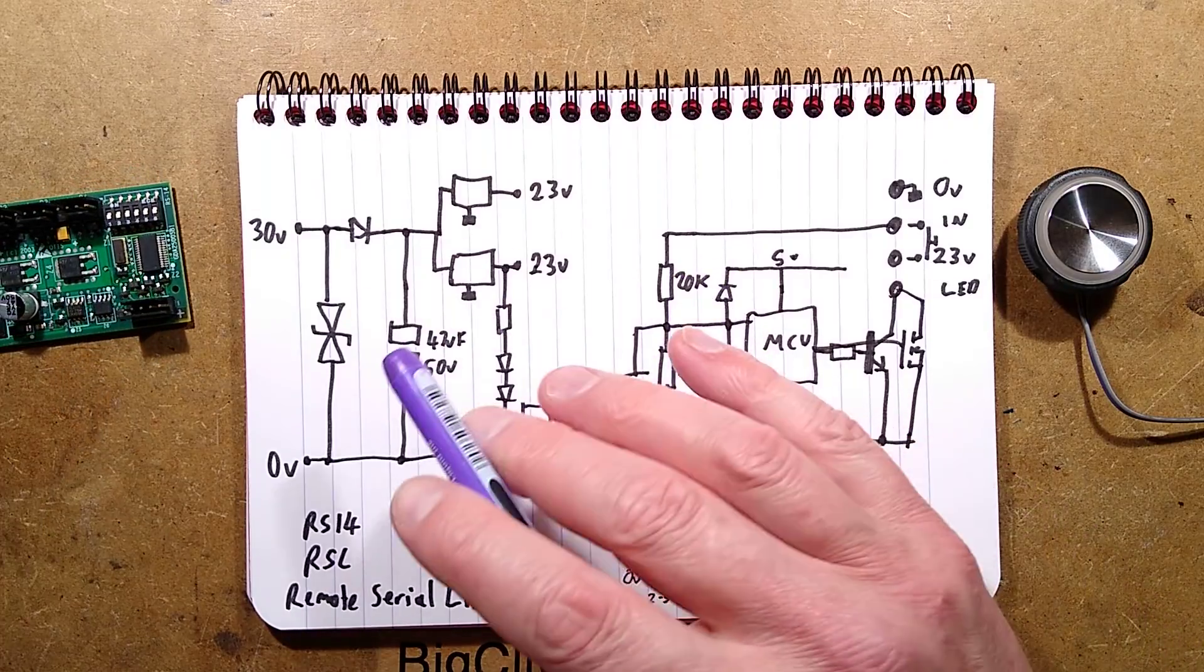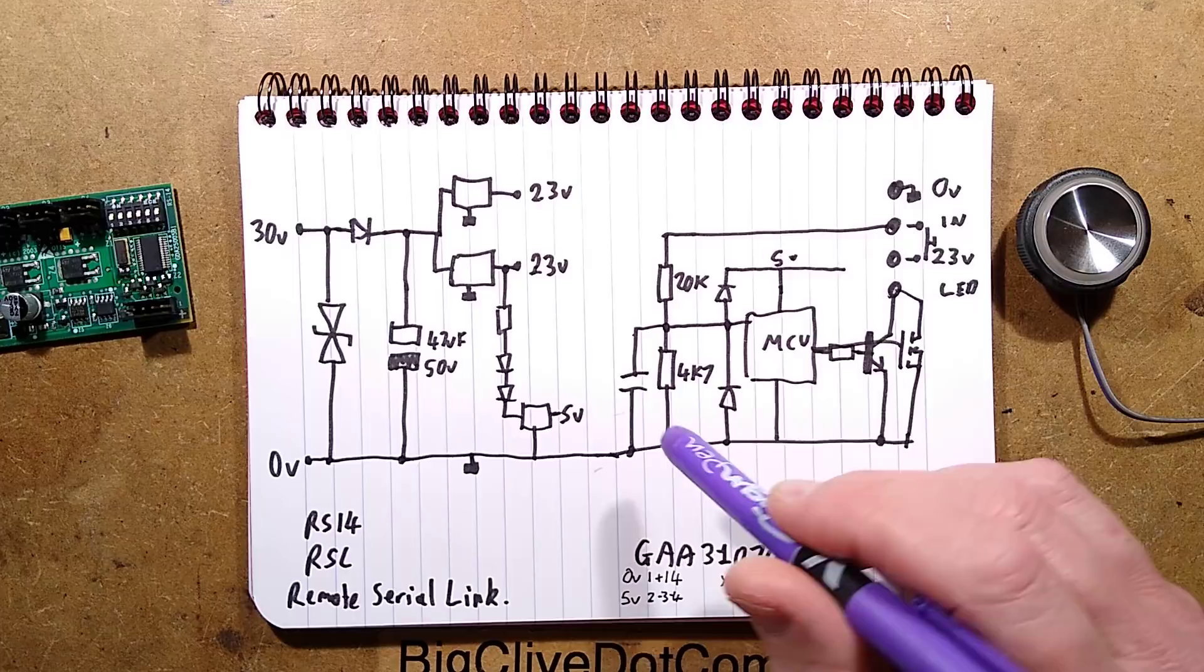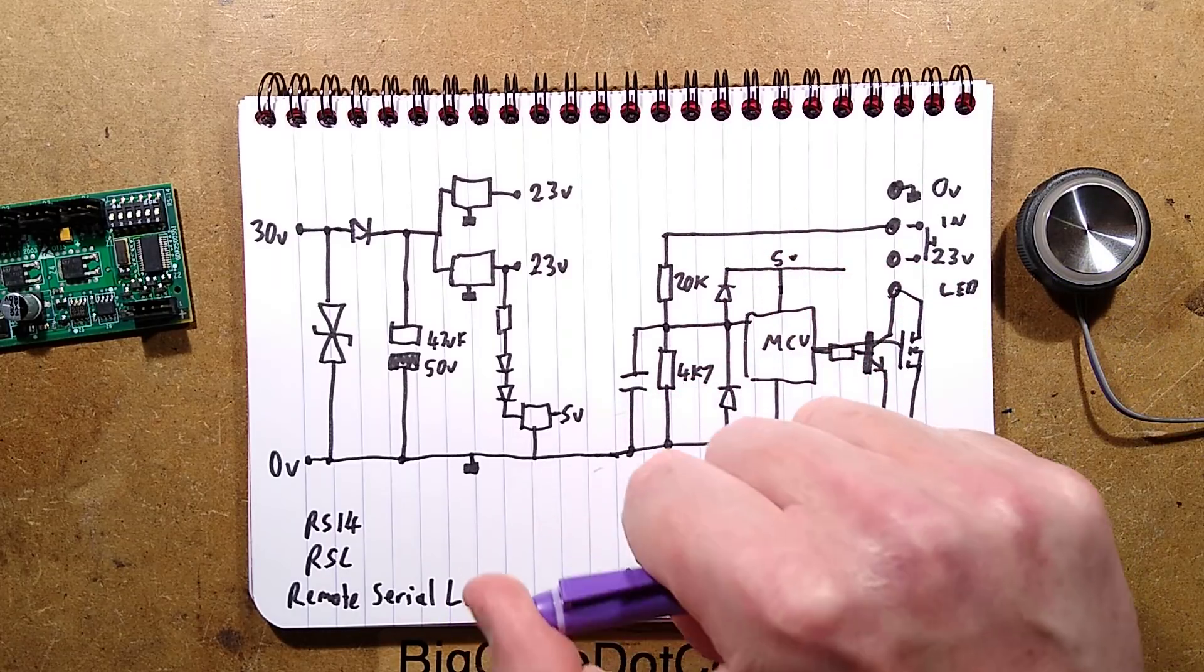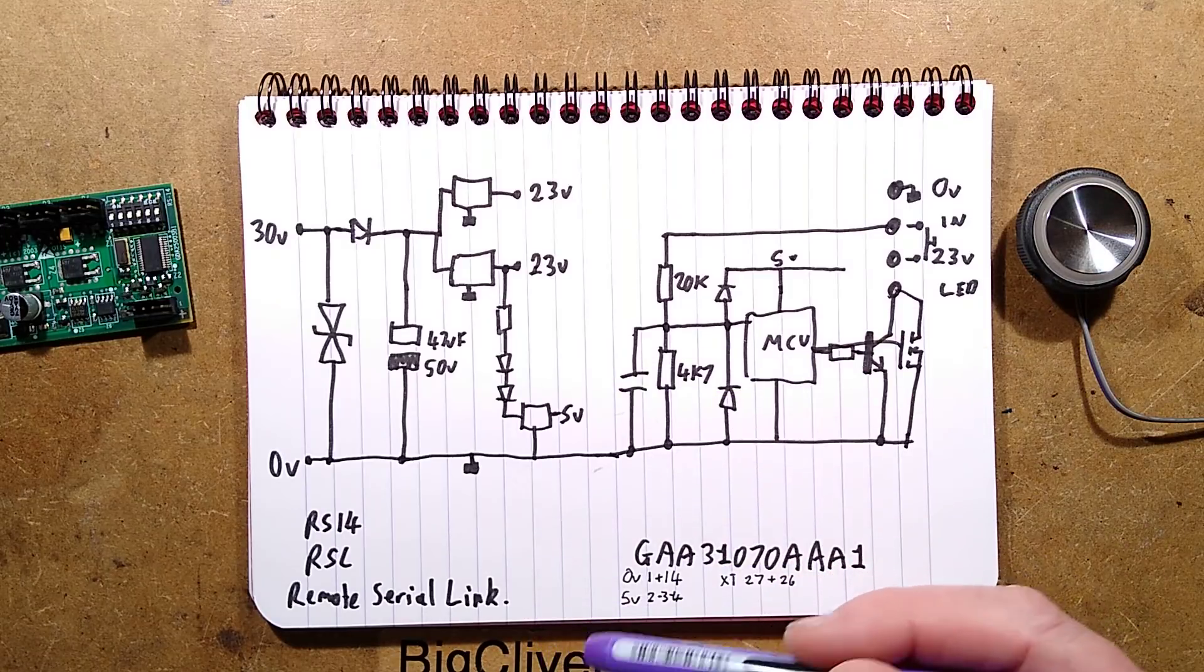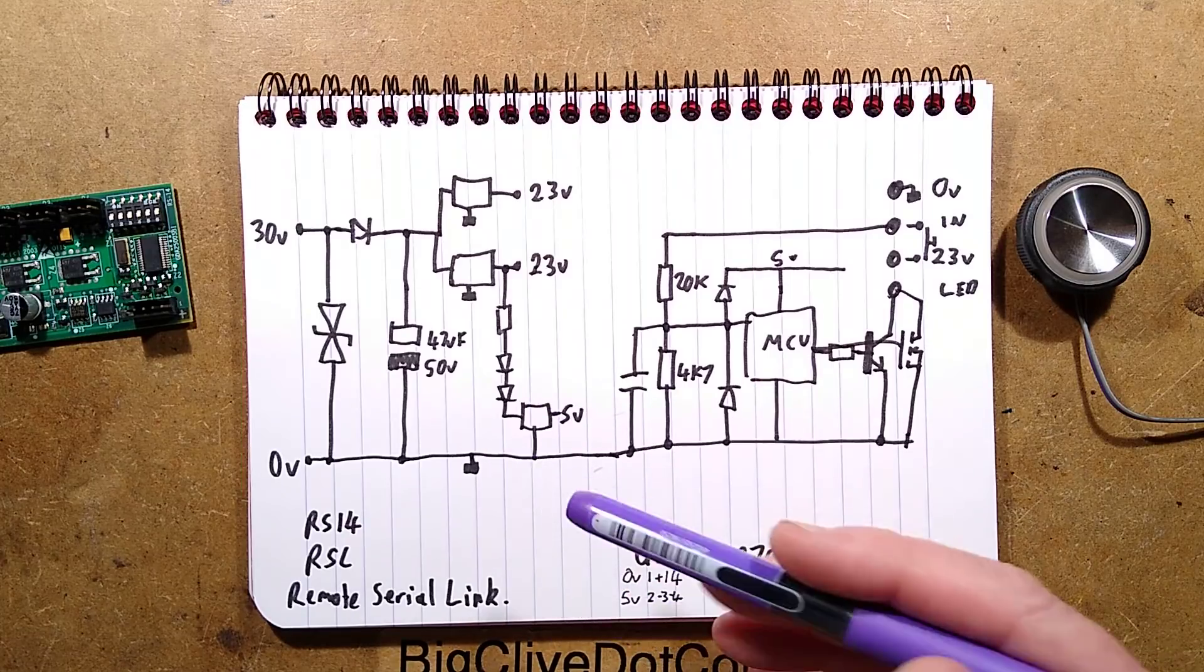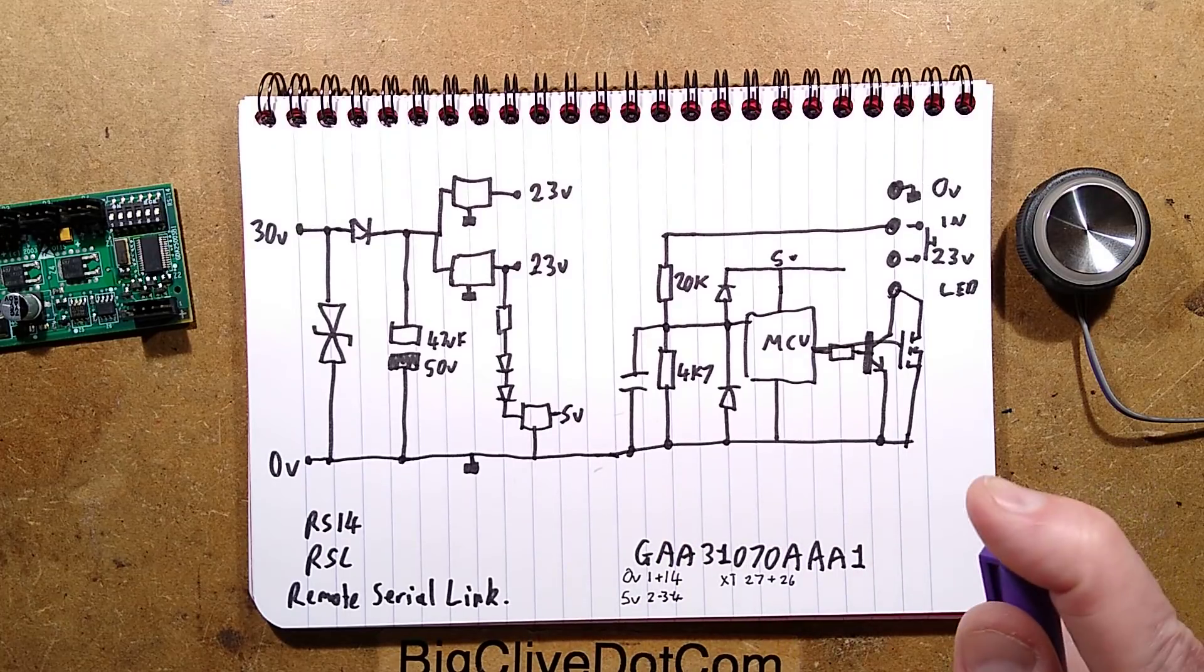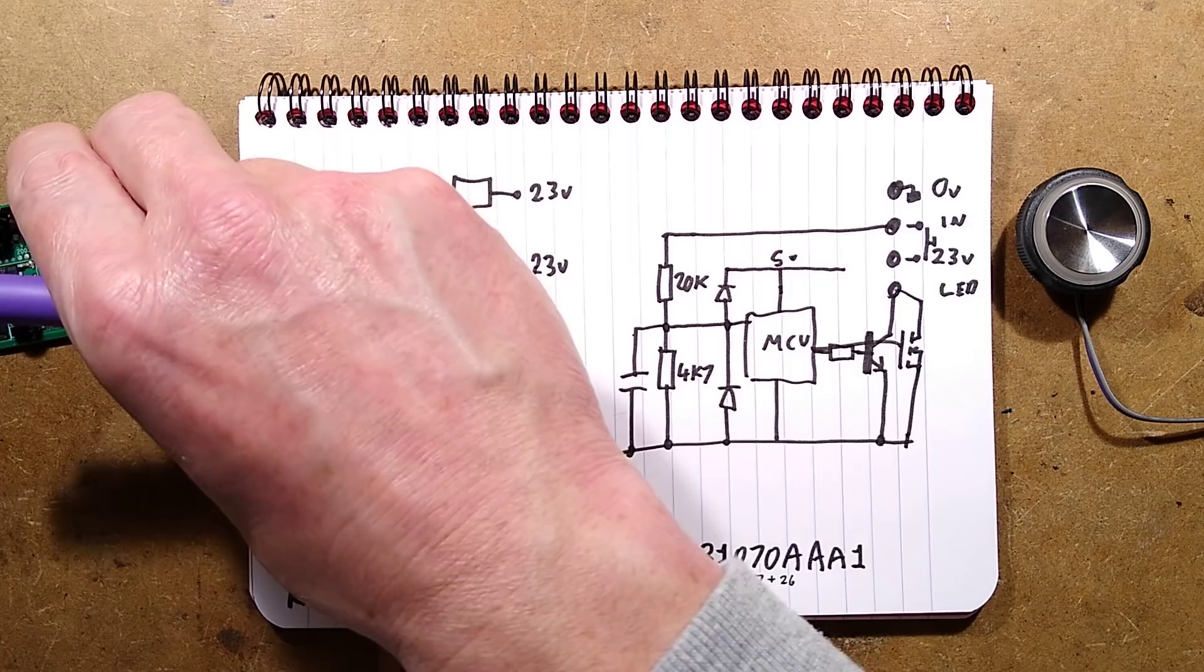It might be harking back to an older standard. Otis do seem to have a patent on this communication protocol. Knowing old Otis, they were quite inventive, always pioneering and ahead of the crowd. It's possible this is a standardized network dating back to when electronics and microprocessors were really just coming in.